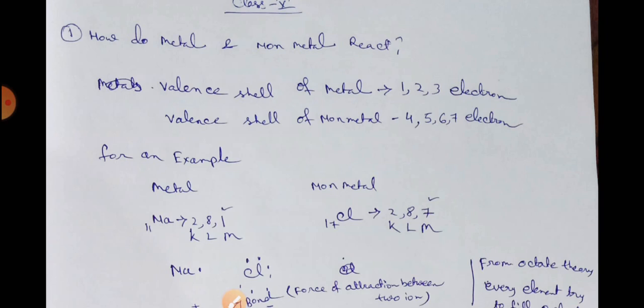So sodium 2, 8, 1 is the electronic configuration, and in the case of chlorine, the electronic configuration is 2, 8, 7. It is denoted by K, L, M shell.